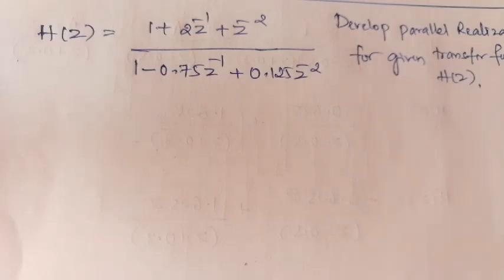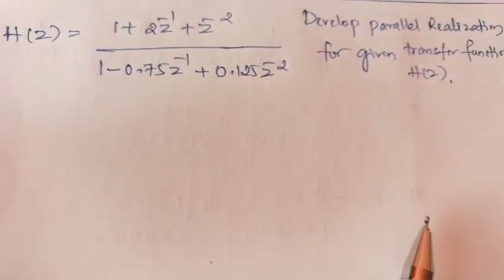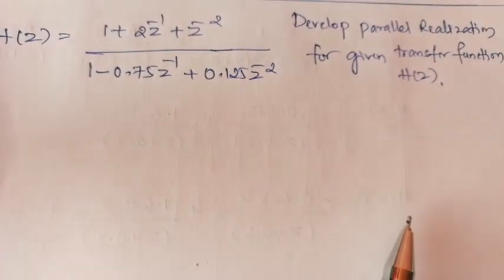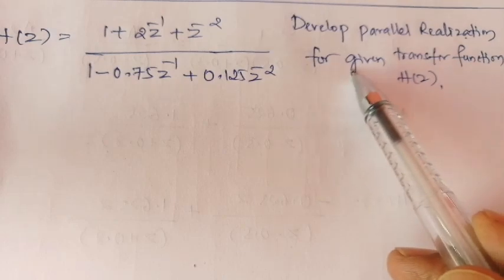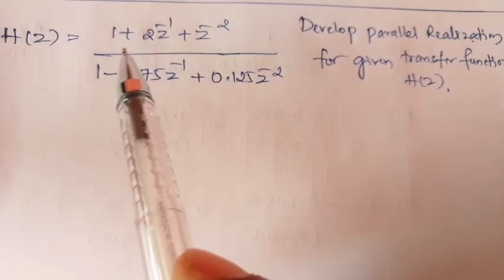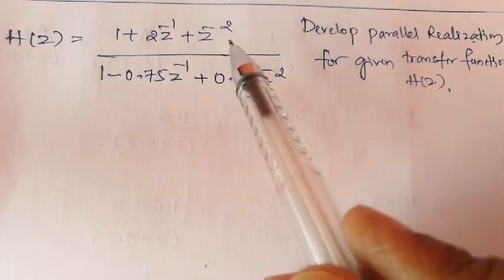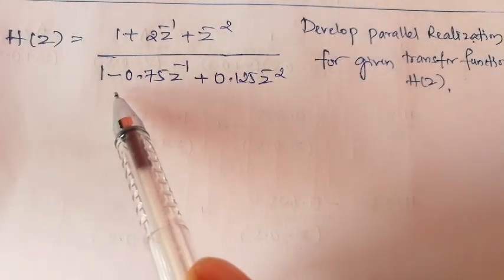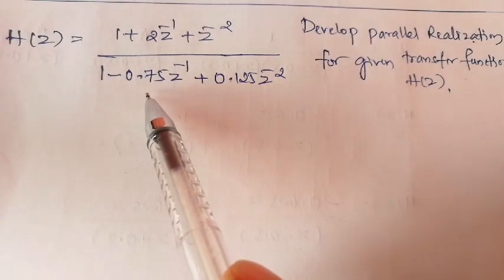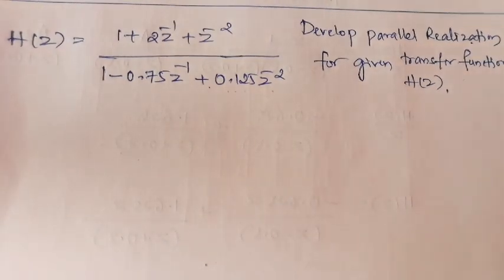In this video we are going to discuss parallel realization of a distal IIR filter. We will discuss with an example: develop parallel realization for a given transfer function H(z), which is equal to (1 + 2z⁻¹ + z⁻²) divided by (1 - 0.75z⁻¹ + 0.125z⁻²).